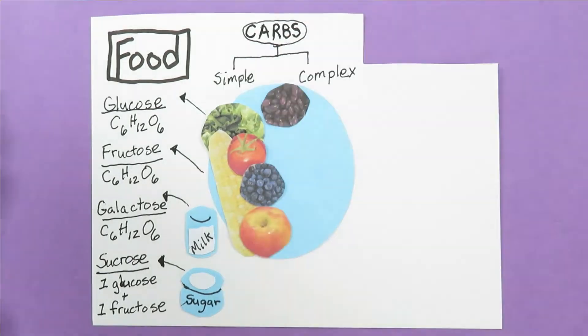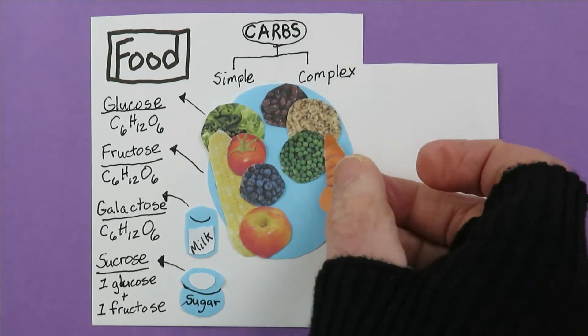Now I'll add some complex carbs like beans, rice, peas, sweet potatoes, and bread. The carbs in these foods are long chains of simple carbs.